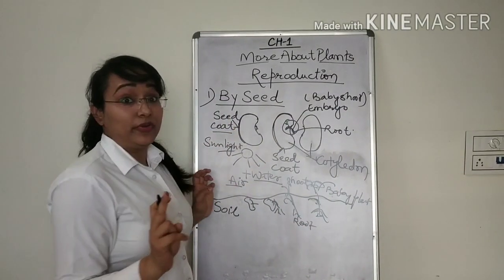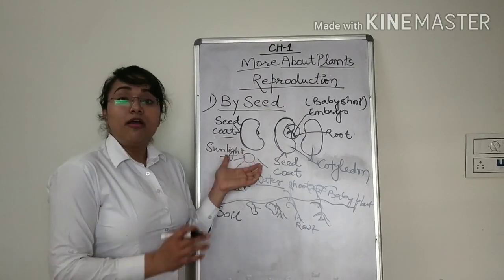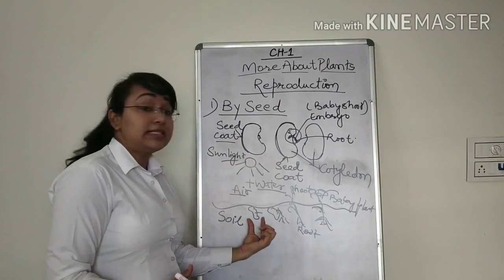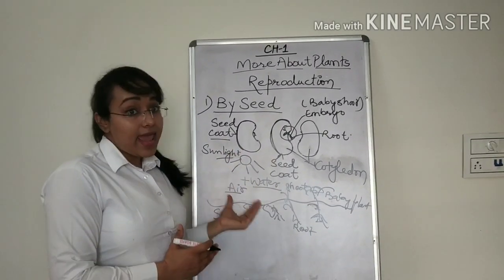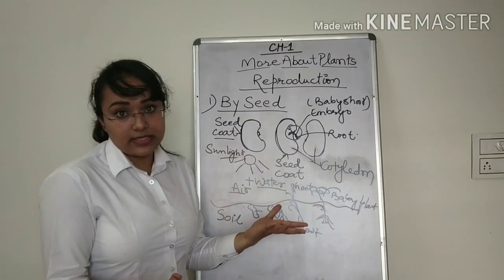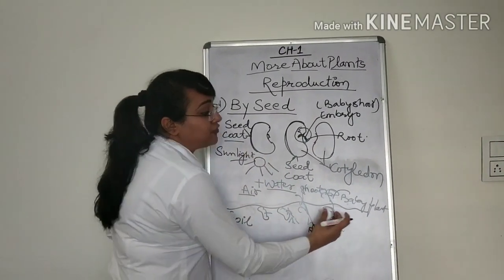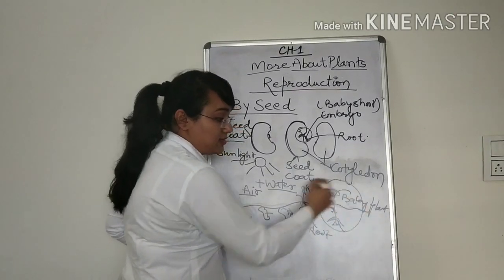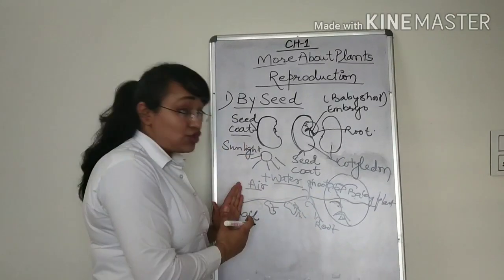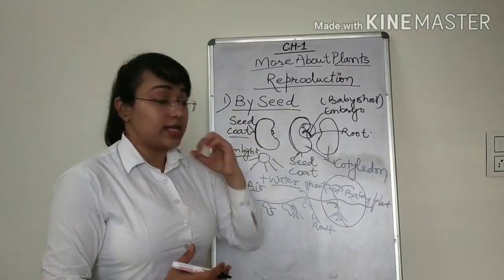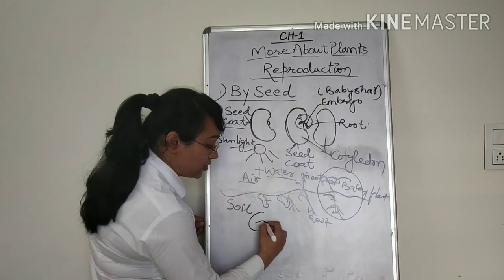Now this only happens, mind you, only with the conditions applied. If we are giving a seed proper sunlight, water and air, which has oxygen obviously, that is necessary for the seed, the seed will grow after some days into a baby plant. So this process from which a seed grows into a baby plant is called germination.